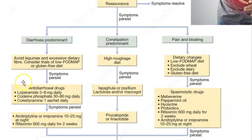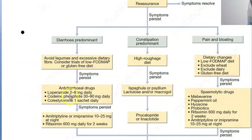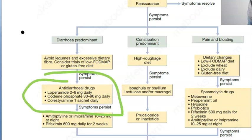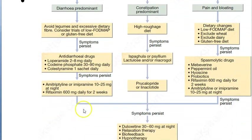Dietary advice for diarrhea-predominant IBS: avoid legumes and excessive dietary fiber. Anti-diarrheal drugs include loperamide, codeine phosphate, and cholestyramine. If symptoms persist, you can give tricyclic antidepressants like amitriptyline or imipramine, and the non-absorbable antibiotic rifaximin.